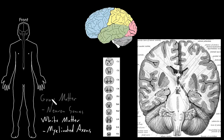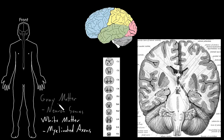These are actually kind of funny names for these parts of the central nervous system, because they're really not gray or white. They're all kind of different tan colors in life. But when the tissue is prepared certain ways after being removed from the body, it can have a grayish appearance or a more whitish appearance. And so these are the names that have stuck: the gray matter and the white matter.